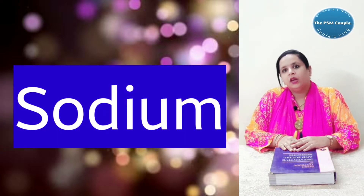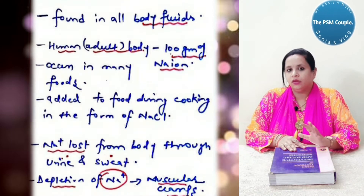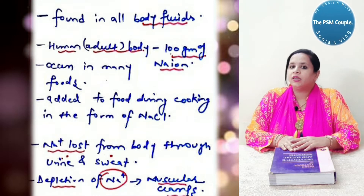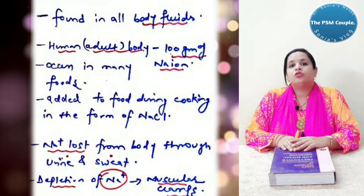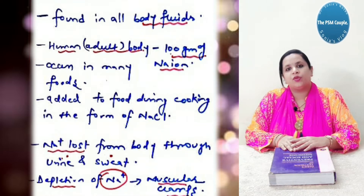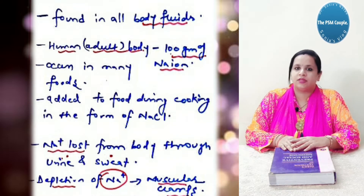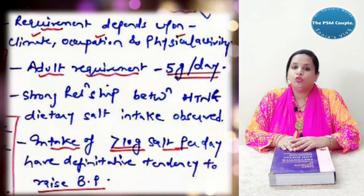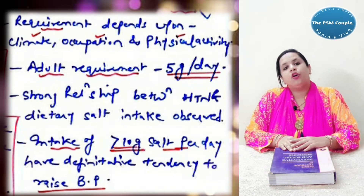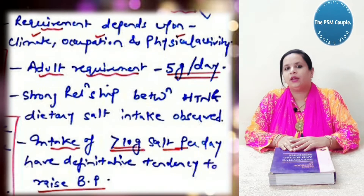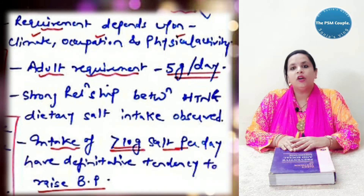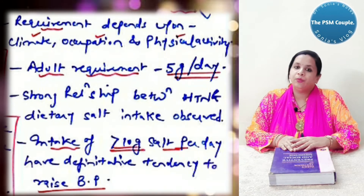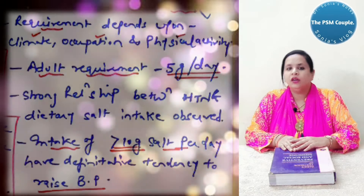Coming to sodium: it is found in all body fluids. The adult human body contains about 100 grams of sodium ion. It is added to food during cooking in the form of sodium chloride. Sodium ions are lost from the body through urine and sweat. Depletion of sodium ions can cause muscular cramps. The requirement depends upon climate, occupation and physical activity. The adult requirement of sodium is 5 grams per day. There is a strong relationship between hypertension and dietary salt intake. Intake of more than 10 grams of salt per day has a definitive tendency to raise blood pressure.